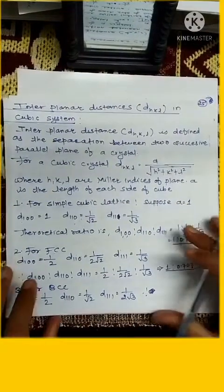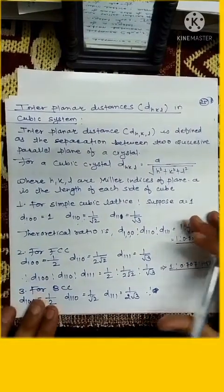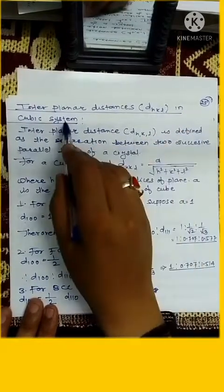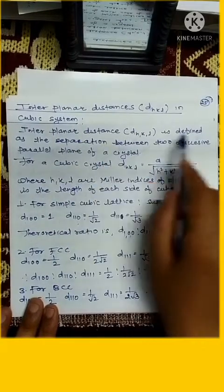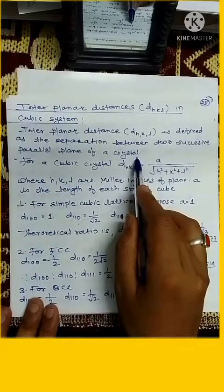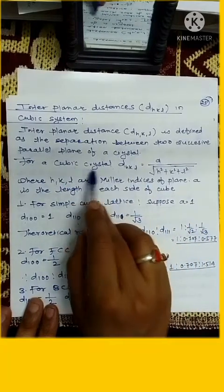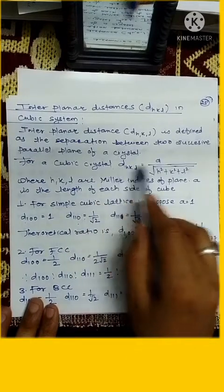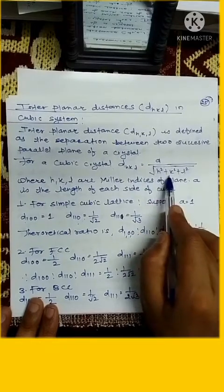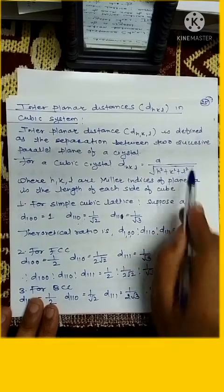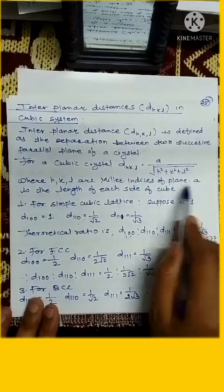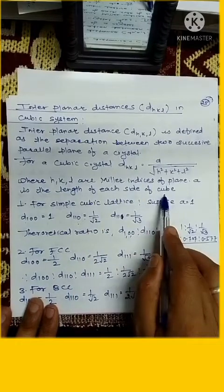Now we are going to see interplanar distances d(hkl) in cubic system. The interplanar distance is defined as separation between two successive parallel planes of a crystal. For a cubic system, d is equal to a divided by square root of (h² + k² + l²), where h, k, l are Miller indices of plane and a is the length of each side of cube.